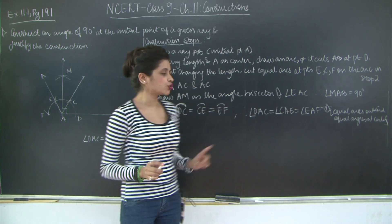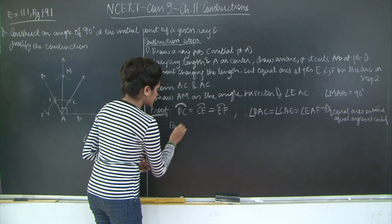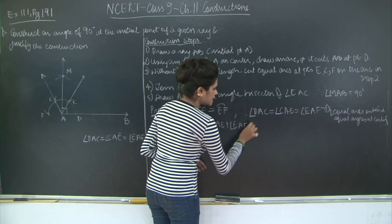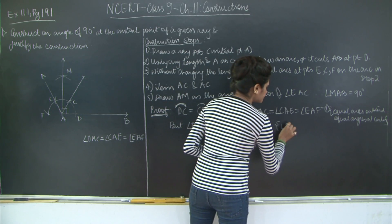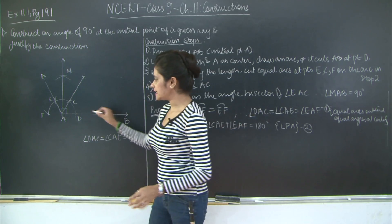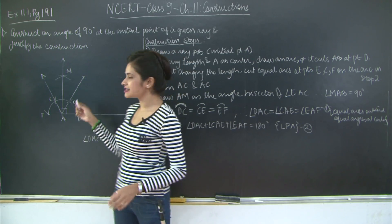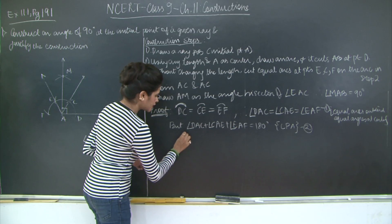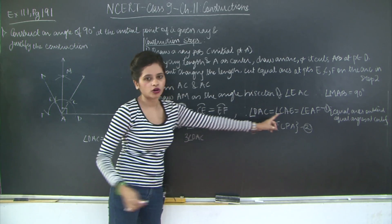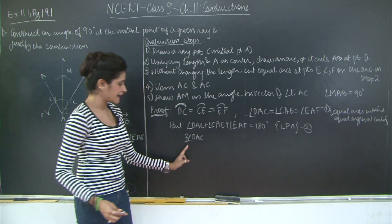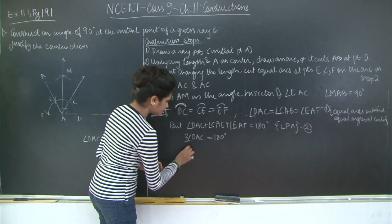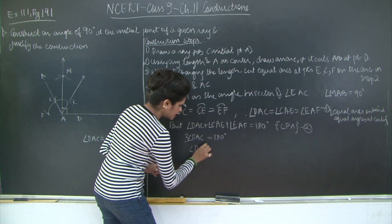But angle DAC plus angle CAE plus angle EAF equals 180 degrees by the linear pair axiom. Mark this as equation 2. From equations 1 and 2, substituting DAC for CAE and EAF — since all three are equal — we get three times DAC equals 180 degrees. Therefore angle DAC equals 180 divided by 3, which is 60 degrees.